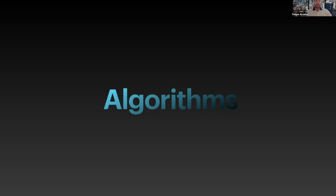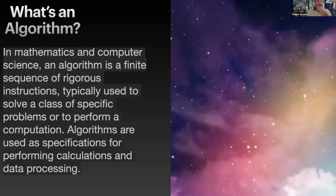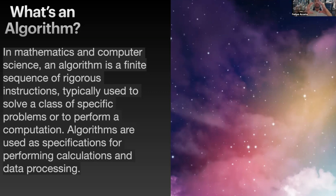So, algorithms — what exactly is an algorithm? Basically, in mathematics and computer science, an algorithm is a finite sequence of rigorous instructions typically used to solve a class of specific problems or to perform a computation. Algorithms are used as specifications for performing calculations and data processing. Most of them are used to either sort data that is received or to traverse through that data.